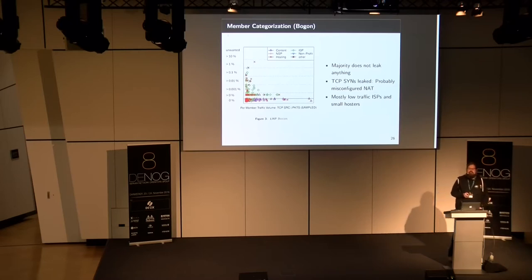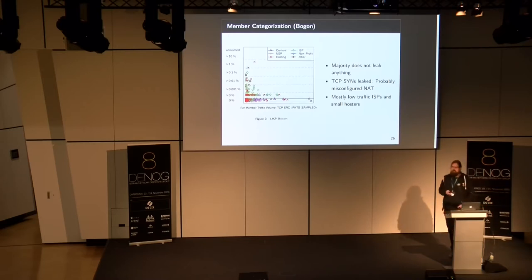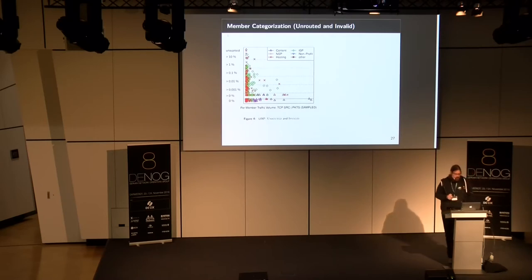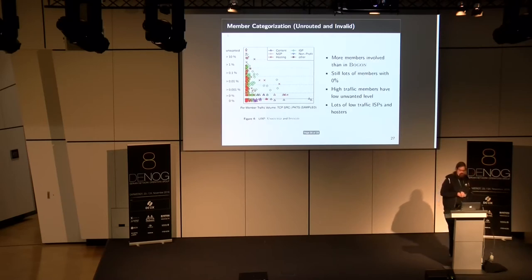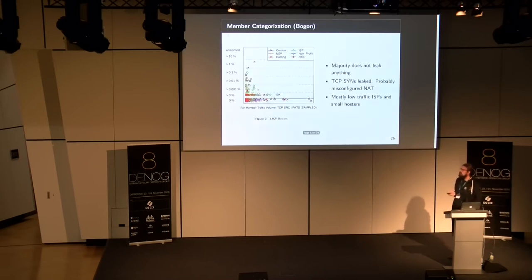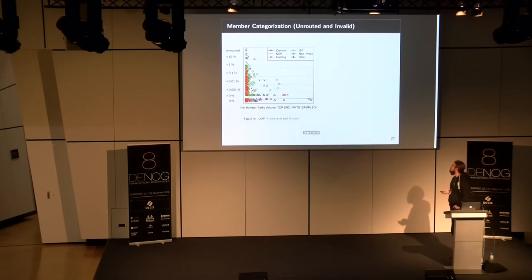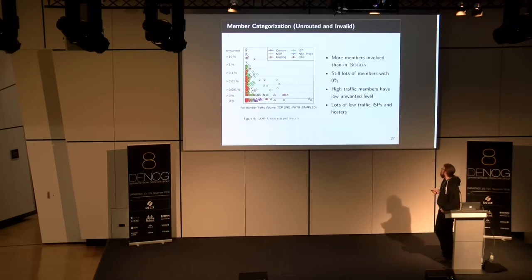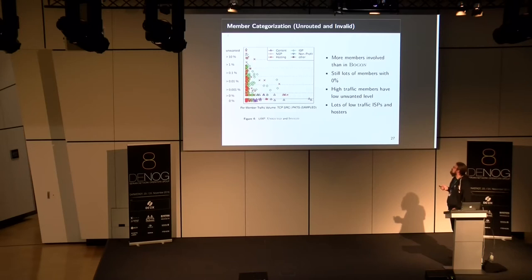Everybody was telling us you can't do BCP38 in big networks — it's so complicated. Apparently, it's not. And if we look at the other categories — unrouted and invalid — we see that these are harder to filter. Bogon was very easy: it's basically a static list, RFC 1918. For unrouted and invalid, this looks a bit different — we get a lot more unwanted traffic. But still, the big members don't have the problem. Here we have some medium-sized members that get into trouble.